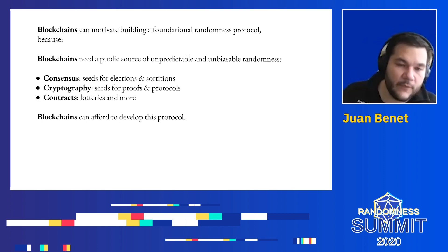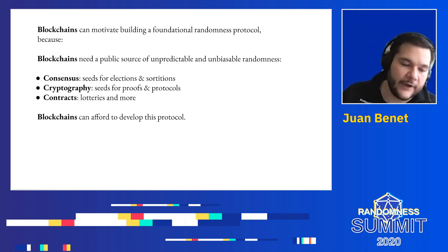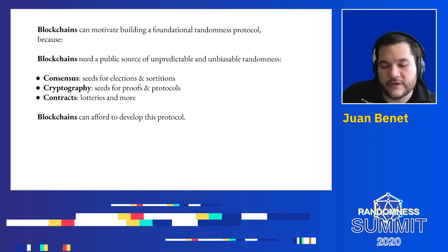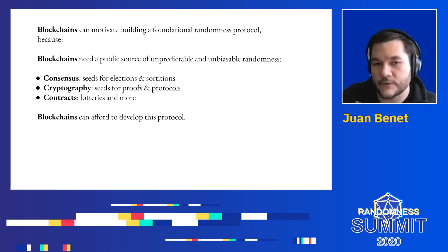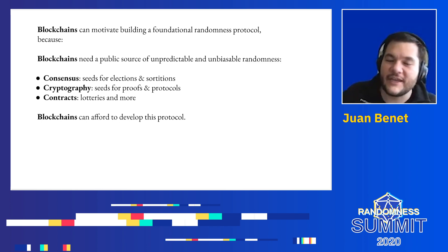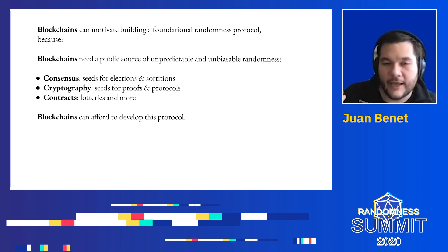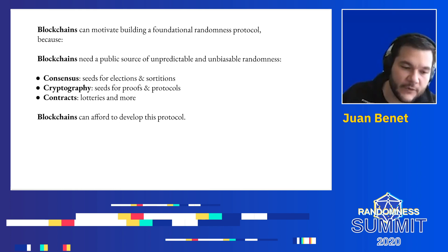It's also pretty important to get randomness into things like smart contracts, where you can have all kinds of applications that need access to an unbiased and verifiable source of randomness. Actual elections — not just computer-protocol elections, but human elections as well — also need a really good source of randomness. The blockchain communities can afford to develop this protocol and turn it into a foundational source of randomness for the world.